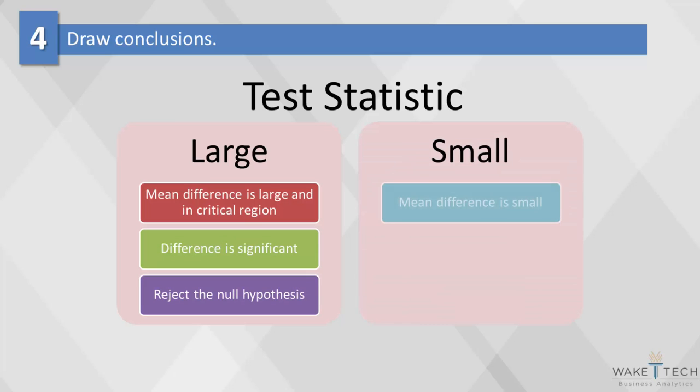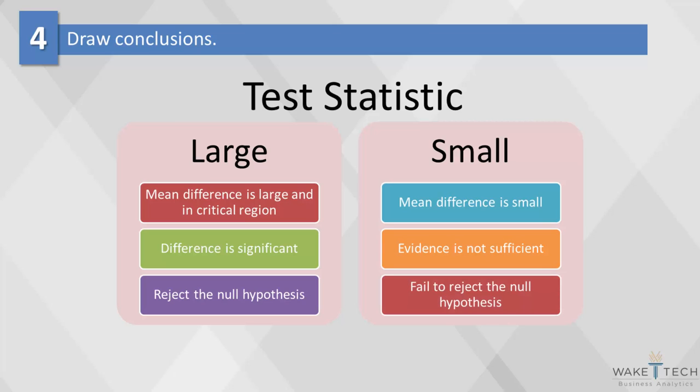If the mean difference is relatively small, then the test statistic will have a low value. In this case, we conclude that the evidence from the sample is not sufficient and the decision is to fail to reject the null hypothesis.